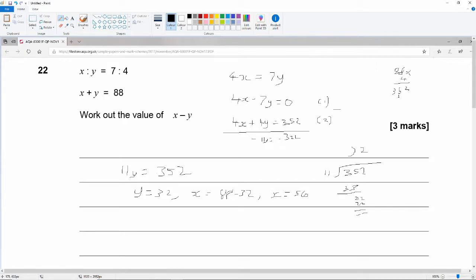So now I've got my values for x and y. x minus y, which is what we're actually asked for in the question, is equal to 56 minus 32, which is equal to 6 minus 2 is 4, 5 minus 3 is 2. So that's 24. So x minus y is 24. And that's your three marks.